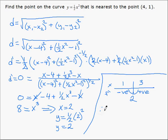So therefore, (2,2) is nearest (4,1) on the curve y equals one half x squared.